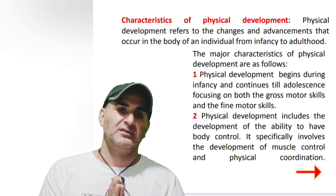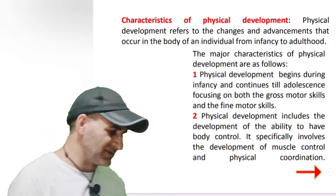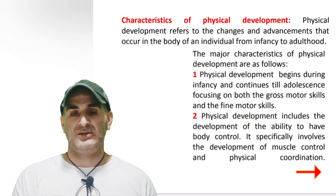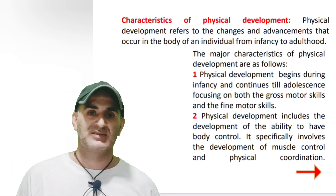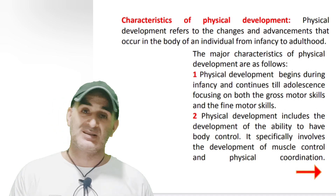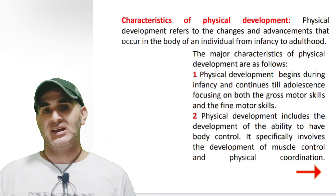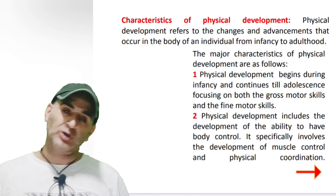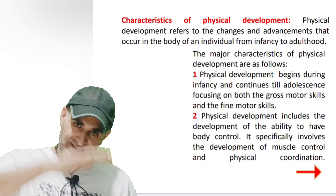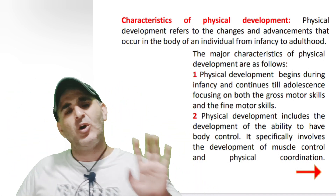Now we will focus on what gross motor skill development is. Gross motor skill development describes when a total change comes in the body — for example, jumping, running, walking, standing, sitting. These are various examples of gross motor skill development.